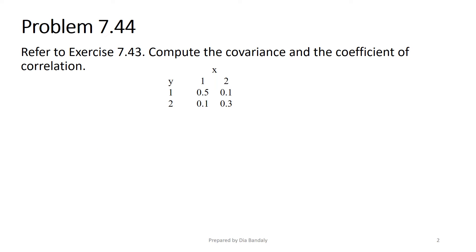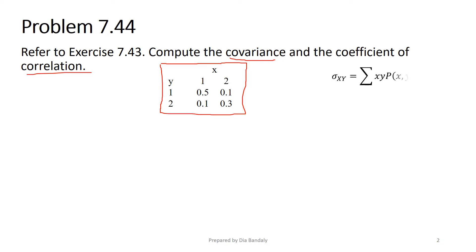This problem is a continuation of Problem 7.43, where we were given the bivariate probability distribution of x and y — shown again here. Now we are asked to find the covariance and the coefficient of correlation. The covariance of x and y is the summation over all values of x times y times the joint distribution P(x, y) for those specific values, and then we subtract the product of their means.